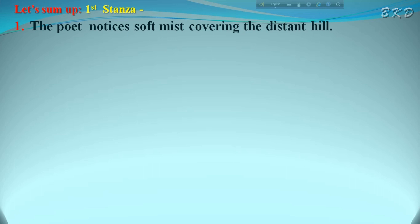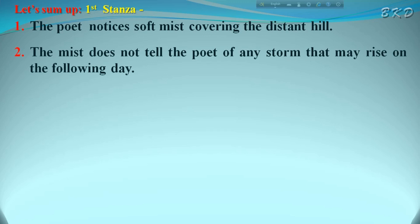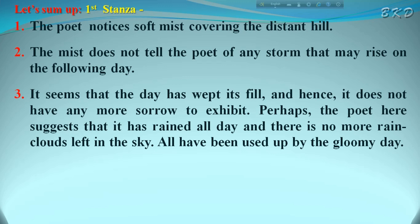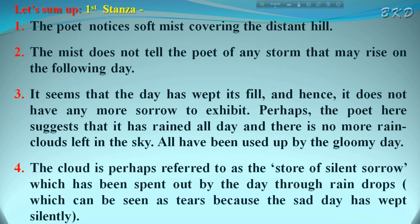Let's now sum up. The poet notices soft mist covering the distant hill. The mist doesn't tell the poet of any storm that may rise on the following day, because the day has wept its fill and doesn't have any more sorrow to exhibit. It has rained all day, and there are no more rain clouds left in the sky. The clouds are referred to as the store of silent sorrow, which the day has spent through raindrops — those raindrops being like tears of a sad day weeping silently.